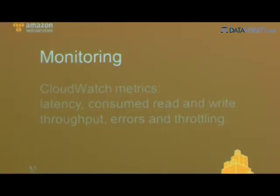For monitoring, DynamoDB leverages CloudWatch — our durable rolling 14-day store of metrics. You can check what your read and write capacity has been utilized, or set up alarms to trigger notifications or automated actions. For example, if you've set 10 or 20 reads per second but your actual reads exceed that amount, DynamoDB will throw throttling metrics that you can key off of.